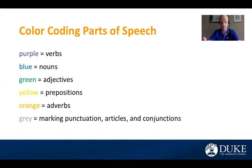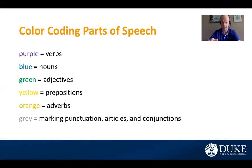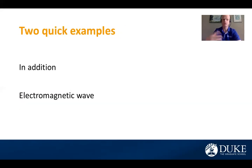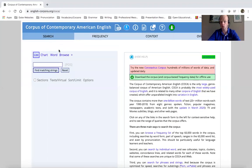So purple will be verbs, blue will be nouns, green adjectives, yellow prepositions, orange adverbs, and gray will be marking punctuation, articles, and different conjunctions. Note that yellow can also be used for some adverbial phrases as well. So let's go ahead — I want to use just a couple of quick examples: "in addition" and "electromagnetic wave."